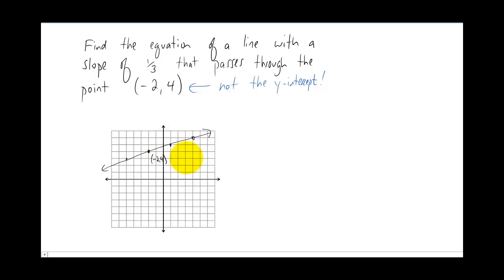Instead we're going to use a formula. This is the point slope equation. Now m is a familiar letter. That still represents the slope. Just like the slope intercept equation the y and the x are actually going to stay in the equation. But the x one and the y one in this equation represent the x and the y coordinates of the given point.